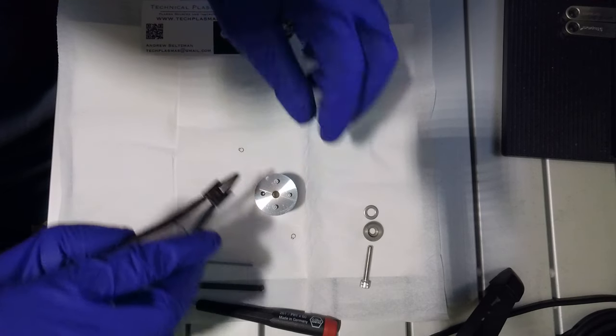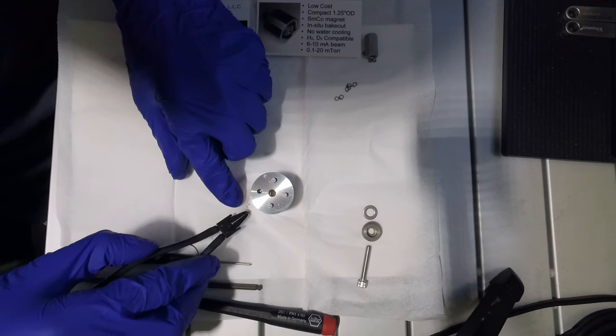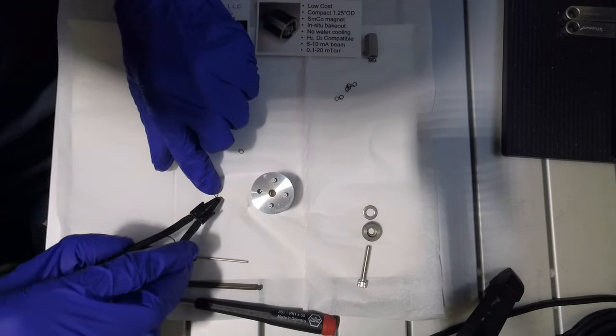Afterwards three more circlips are installed on the rear of the ion source to retain the insulator bushings.